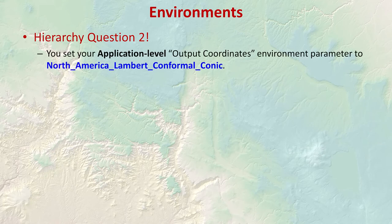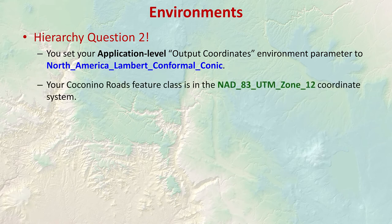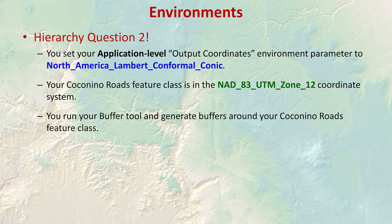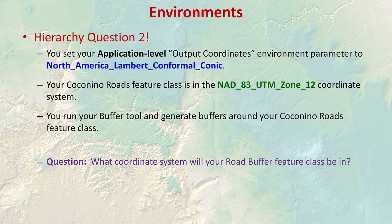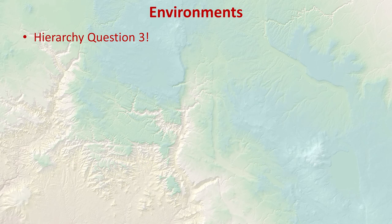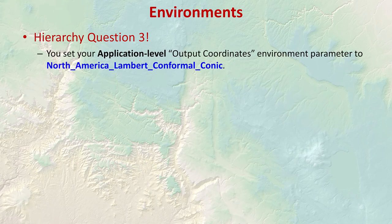Now let's add some settings. We set our application-level output coordinates to North American Lambert Conformal Conic. Our roads are still in NAD83 UTM Zone 12. We run the buffer tool — what coordinate system will the buffers be in? By setting the application-level environmental parameter, all tools you run in this ArcGIS Pro project will produce data in Lambert Conformal Conic no matter what coordinate system they started in. The answer is North America Lambert Conformal Conic.